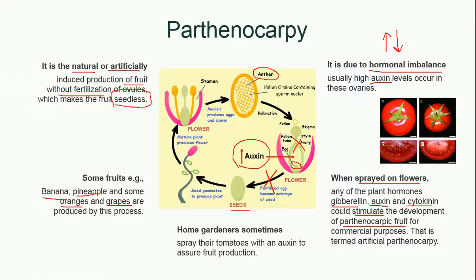When we artificially induce parthenocarpy, it is known as artificial parthenocarpy. Some home gardeners spray their tomatoes with auxin to ensure seedless fruit production. Seeds present in tomatoes may lead to kidney stones, so if a tomato is produced without seeds, we can help prevent kidney stones.